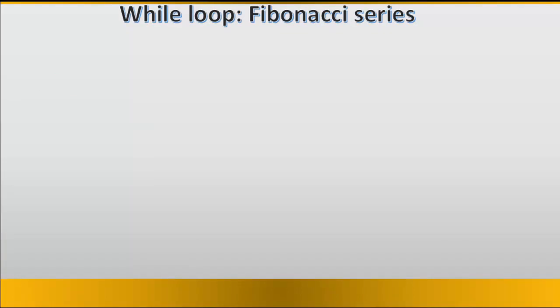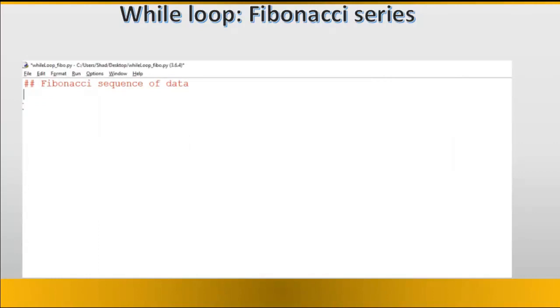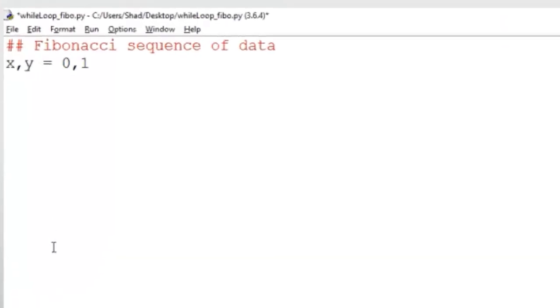An example of while loop is a simple Fibonacci series. A Fibonacci series is a series of numbers that increase in a certain fashion. Here we introduce two variables x and y. So x is equal to 0 and y to 1.